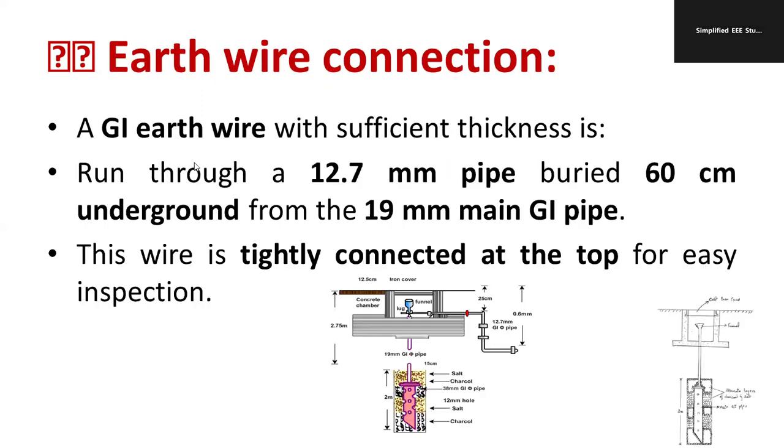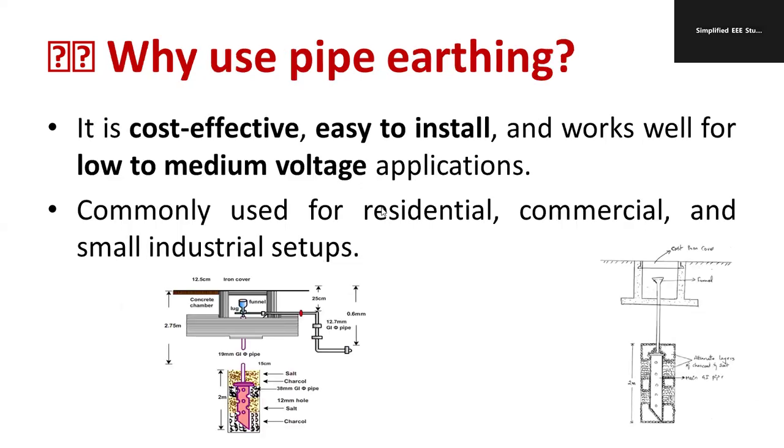A GI wire with sufficient thickness runs through a 12.7mm pipe buried 60 centimeter underground from the 19mm GI pipe. This wire is tightly connected at the top for easy inspection. It's connected so we can easily inspect, maintain, and operate. If something is wrong, we can easily fix it.